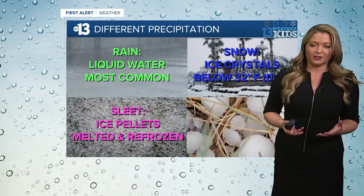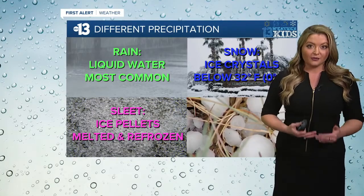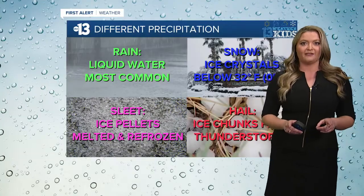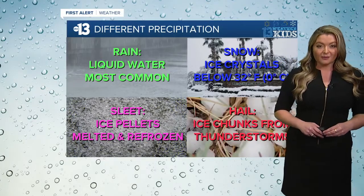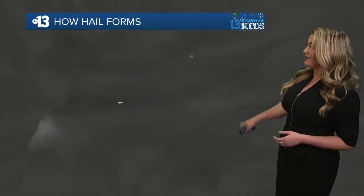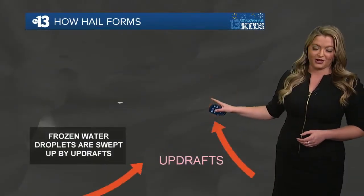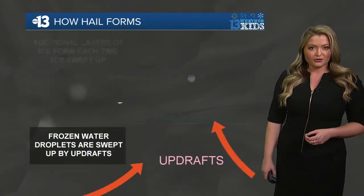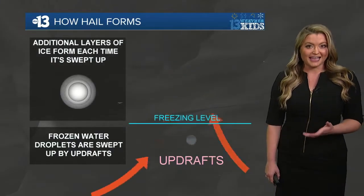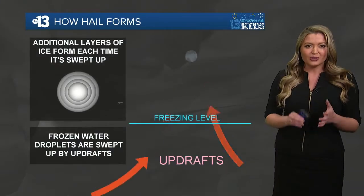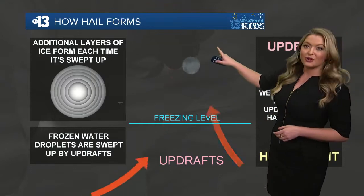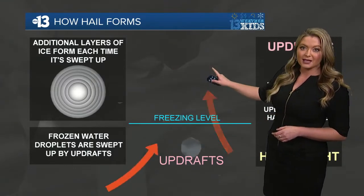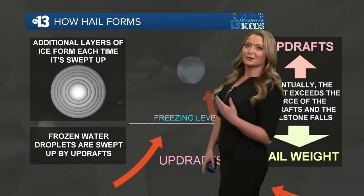Hail is kind of similar — it goes through rounds of freezing, but it needs the updraft of a thunderstorm cloud to help it out. The tops of strong thunderstorms are usually very cold because they're very high in the atmosphere, so the water droplet in the cloud turns to ice. They get really heavy, heavy enough to fall, but the strong updraft in the thunderstorm picks them back up and sends them around again.